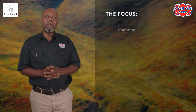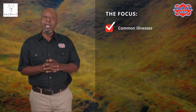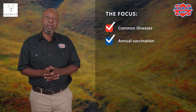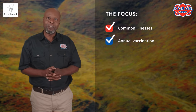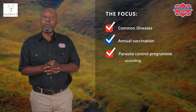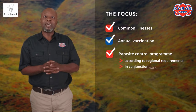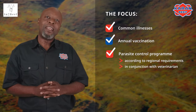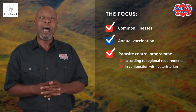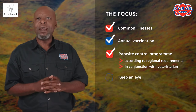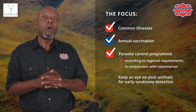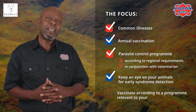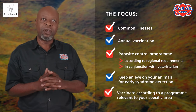This episode focuses on the common illnesses that can impact the health of your cattle and why your animals must be vaccinated annually against notifiable and prevalent diseases. Your parasite control program should be applied according to regional requirements and in conjunction with your veterinarian's recommendations. No vaccination guarantees 100% prevention, so a very keen eye and time spent with your animals is important for early syndrome detection. Vaccinate according to a program relevant to your specific area.